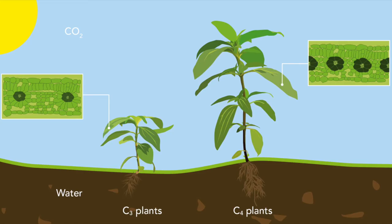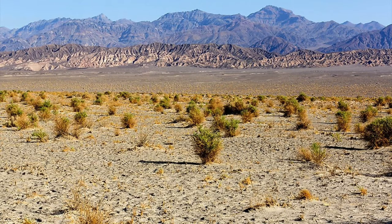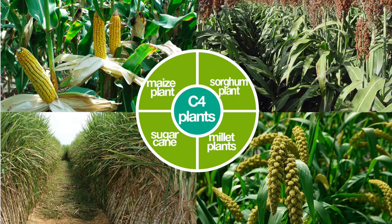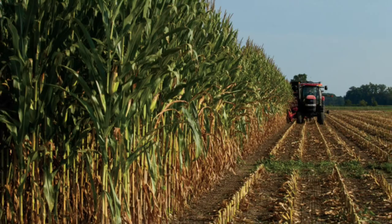Since C3 photosynthesis is not efficient in arid climates, plants in hot and dry areas independently evolved other methods to convert carbon dioxide into more useful compounds. This created C4 photosynthesis, which occurs in about 3% of terrestrial plants, many of which are used in agriculture.